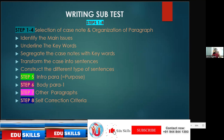Step five is purpose — very important because you score more on purpose. If the purpose paragraph is correct and impressive, you will score well. Step six is the body paragraph, step seven is how other paragraphs are formed, and step eight is self-correction criteria. Follow steps one through seven first, and then you will be able to arrange the letter properly.